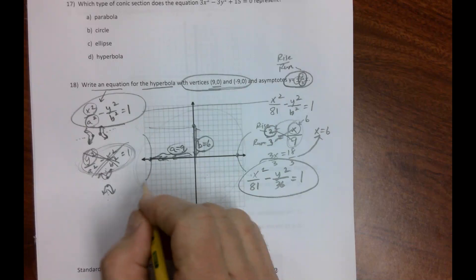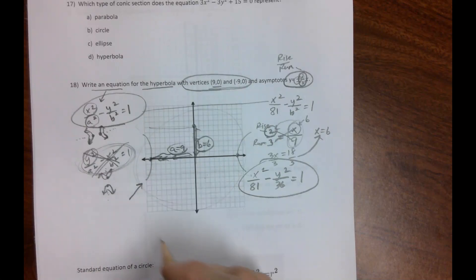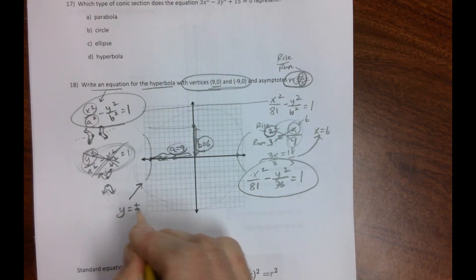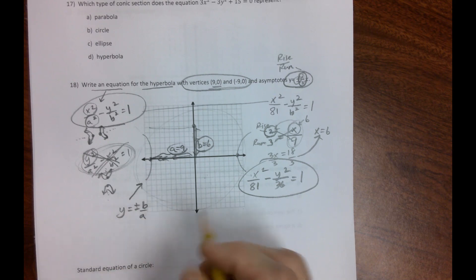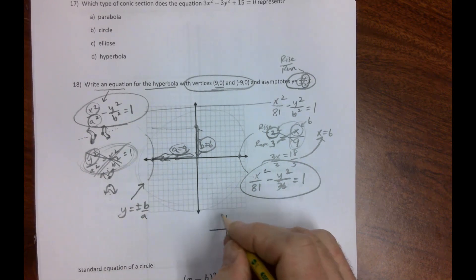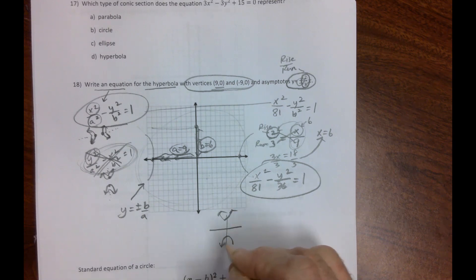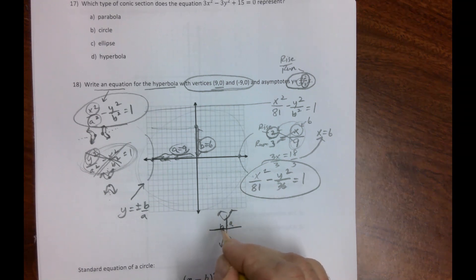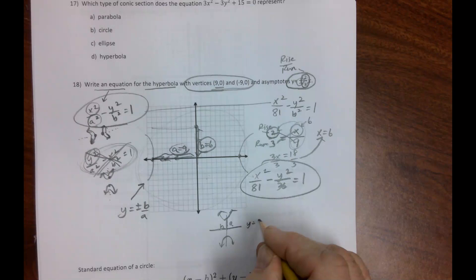On these types of hyperbolas, it's y = ±(b/a)x. But if they were hyperbolas like this, then our a would be our rise and our b would be our run, so we'd go y = ±(a/b)x. It depends on which way the hyperbola is going.